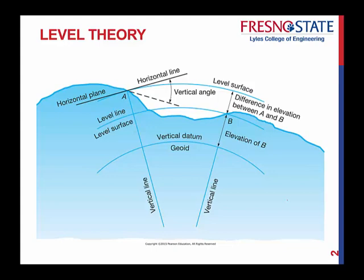A geoid is a particular level surface that serves as a datum for all elevations and also astronomical observations — it's just another level surface we can discuss. A benchmark is an object, natural or artificial, having a marked point whose elevation above or below a reference datum is known or assumed. It creates a very specific and known point — a specific distance above a vertical datum along a vertical line. You'll find benchmarks throughout anywhere you go, and they establish elevations for new projects.